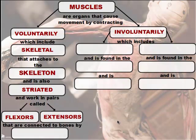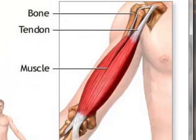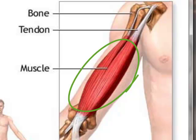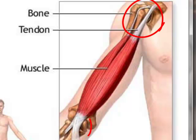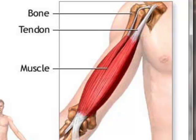We can't have our muscles pull on our bones if they're not connected by something. Our muscles are connected to our bones by strong bands of tissue called tendons. As you can see in this diagram, the bicep muscle is attached to the bone in your shoulder joint by tendons and also to your forearm by tendons. If muscles weren't attached to bones, they could contract all they want, but the bones wouldn't do anything. Tendons are connective tissue that attach muscles to bones — whereas ligaments connect bones to bones.